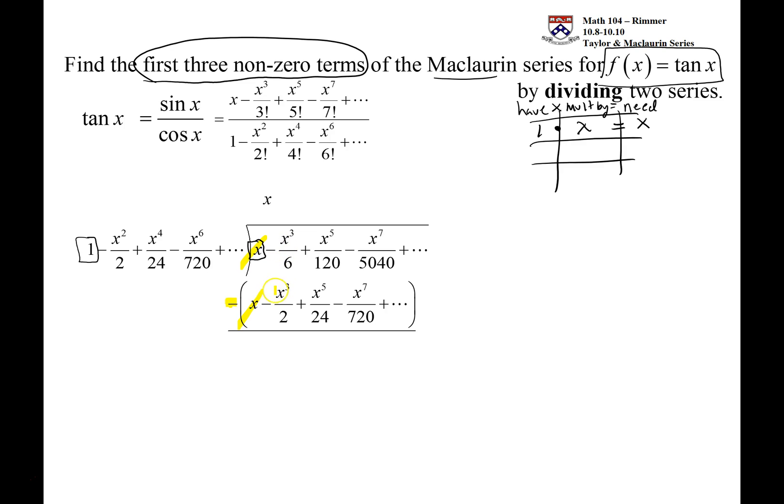When it comes time to the cubic term, we're going to have a negative 1 sixth take away a negative 1 half. So plus a 1 half. And just do the fraction arithmetic, we have negative 1 sixth and 3 sixths, so all together we have 2 sixths, and that will then be x cubed over 3.